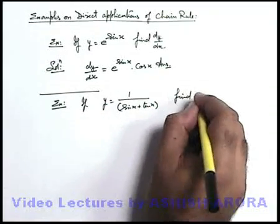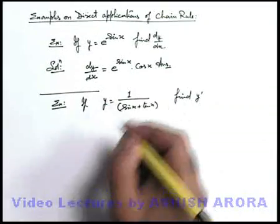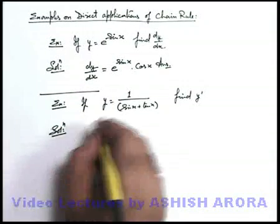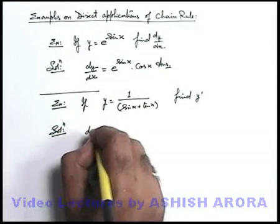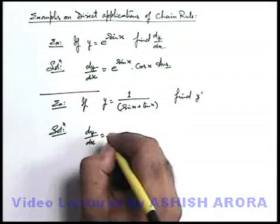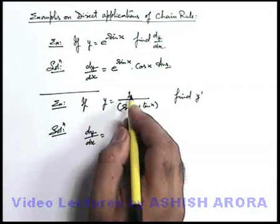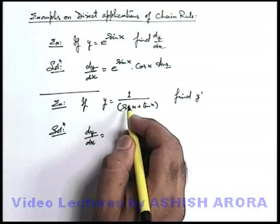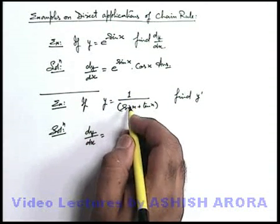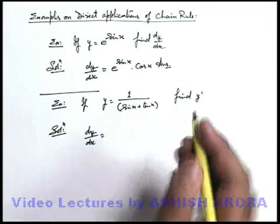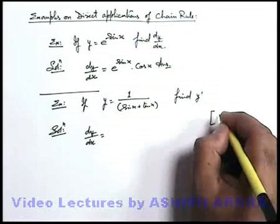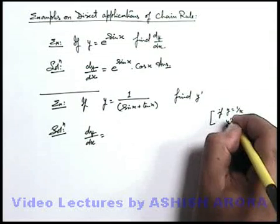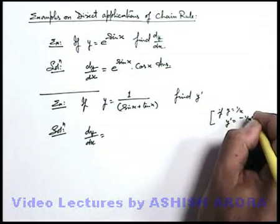We are required to find y prime. While calculating dy/dx, recall the direct algebraic differentiation formula for one by x, which is minus one by x squared. So if y is equal to one by x, we can write y prime as minus one by x squared.